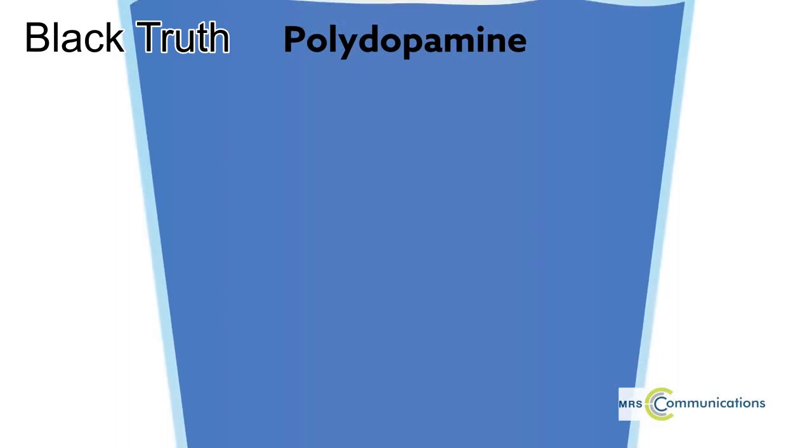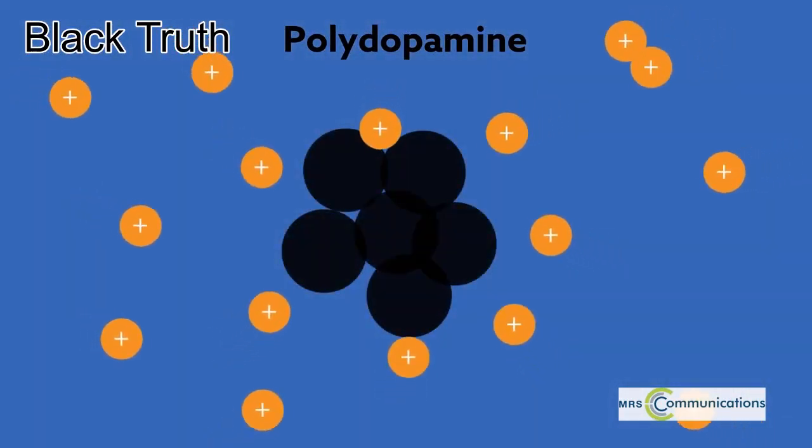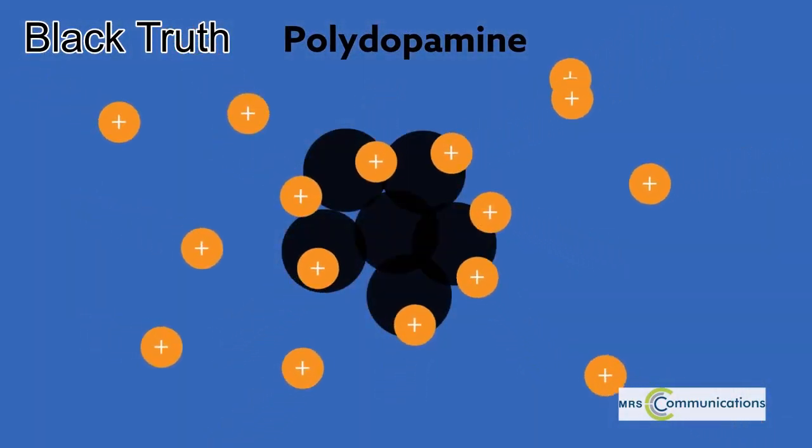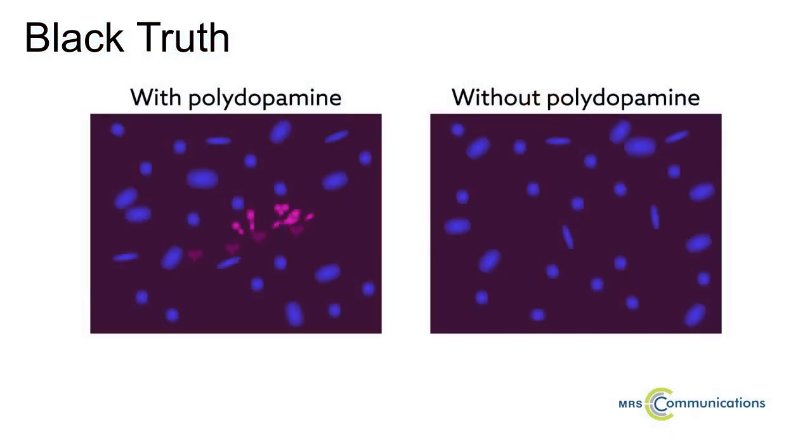Polydopamine, a synthetic melanin analogue, has been used to extract harmful metal ions from water. And polydopamine coated nanoparticles have been shown to boost the sensitivity of tests designed to seek out diseases like HIV, Zika and cancer.